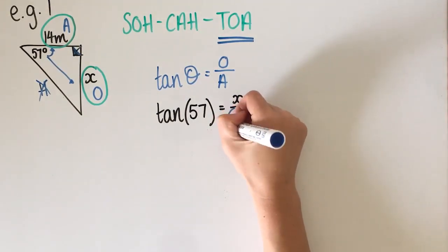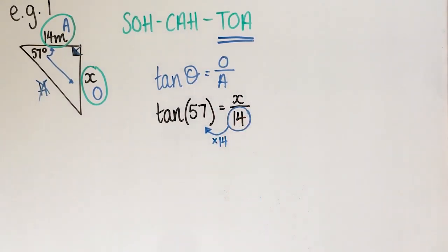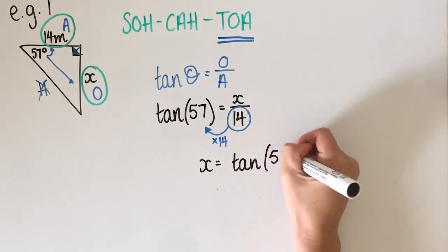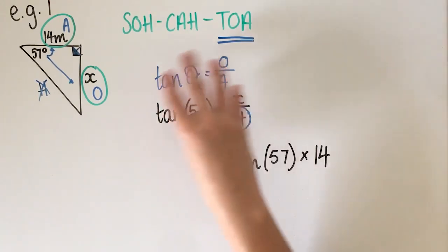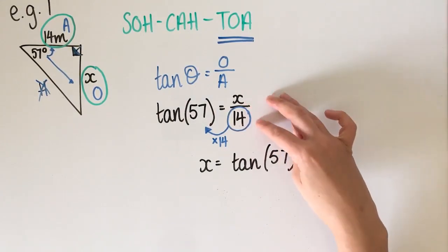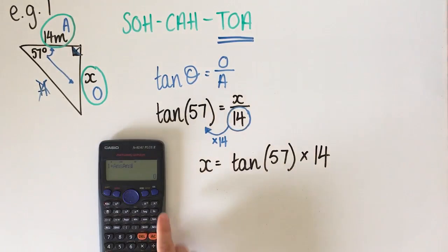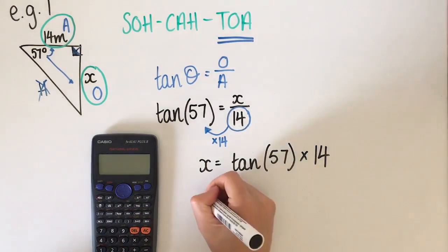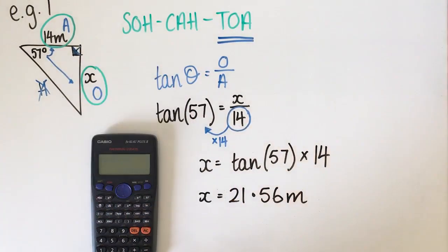To do that I need to do the inverse of dividing by 14, so I times both sides by 14. My new formula is tan of 57 times 14, and that will give me what X is. On my calculator: tan(57) close bracket times 14 gives me 21.56 metres.